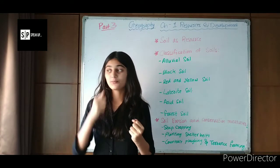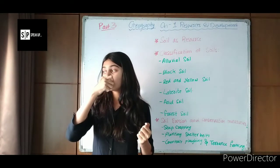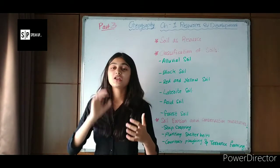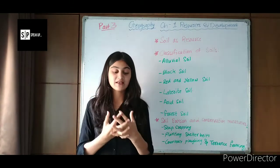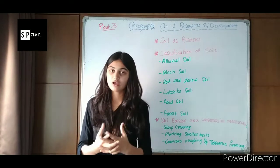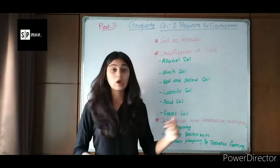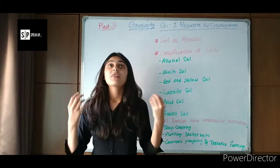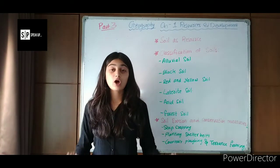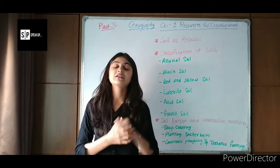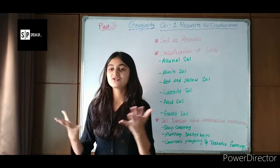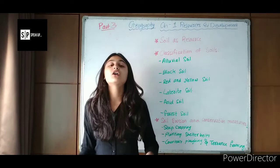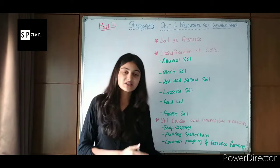Then comes laterite soil. Laterite soil has a lot of moisture and can be described as a clay soil. Then comes arid soil. Sand is an example of arid soil. The soil present near the Kutch region or the Rajasthan region is known as arid soil.